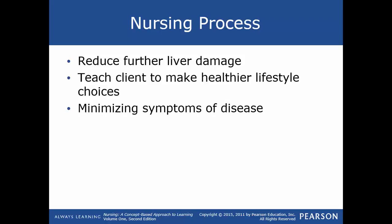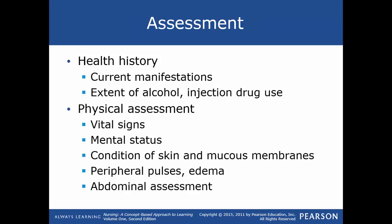The nursing process for liver disease is aimed at reducing further liver damage, teaching the client to make healthier lifestyle choices, and minimizing symptoms. Assessment includes a good health history: abdominal distention, jaundice, pruritus, alterations in libido or impotence, duration of symptoms, history of liver or gallbladder disease, current medications, and current manifestations such as abdominal pain, recent weight loss, weakness, anorexia, altered bowel elimination, and excessive bleeding or bruising.